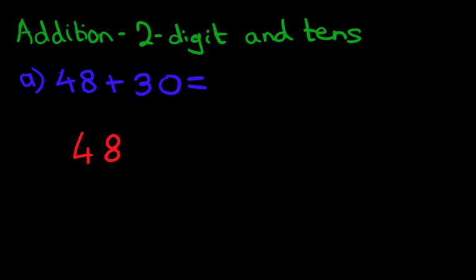Here we have 48, we put a plus sign, and we put 30 here. Now, we don't have to, but we can label each of the columns. The first column is the units, and the one next to it is the tens column, and do you remember what we have to do?